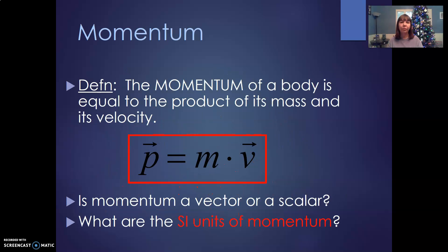So momentum is related to the mass and the velocity. So something very big would have more momentum. Something that's moving very fast would have more momentum.